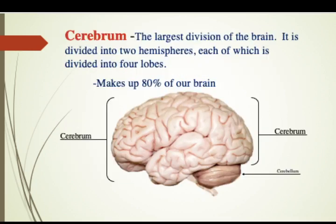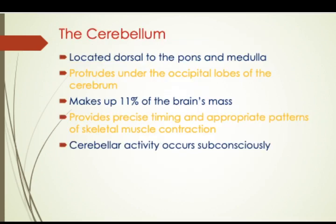The cerebrum is the largest division of the brain. It has two hemispheres, and each is divided into four lobes. The cerebrum makes up about 80% of our brain. The cerebellum is located dorsal to the pons and the medulla — it protrudes under the occipital lobes of the cerebrum and makes up about 11% of the brain's mass. The cerebellum regulates skeletal muscle contraction, controlling the precise timing and pattern of muscle activity, and this activity is subconscious.